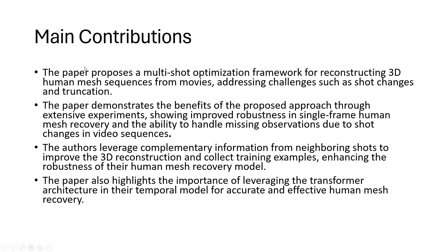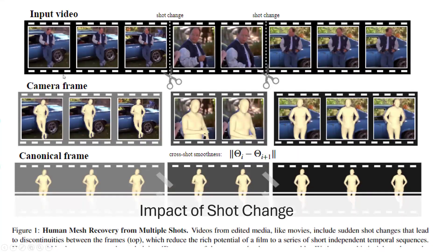The main contribution of the paper is they propose an optimization method called the multiple-shot optimization framework for constructing 3D human mesh sequences for movies. In movies, a character can appear in multiple scenes. The scenes are defined by camera perspective — for example, the first three scenes are from the same camera perspective, the next two are from a different perspective, and the following three are from another perspective. So these are counted as three shots in a temporal learning scenario.